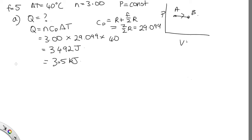OK, now we're asked to calculate, in part B, the change in internal energy of the gas. So we'll need to use the formula for the change in internal energy. It's F over 2NR delta T.